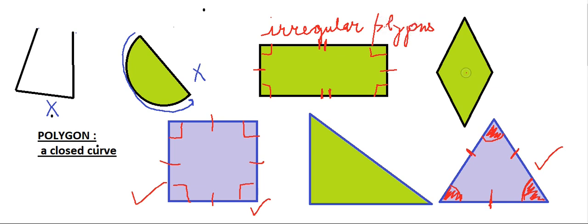This is a diamond shape. Here all sides are of equal length, but it is not considered a regular polygon because it has two acute angles and two obtuse angles. So the measure of angles is not the same.